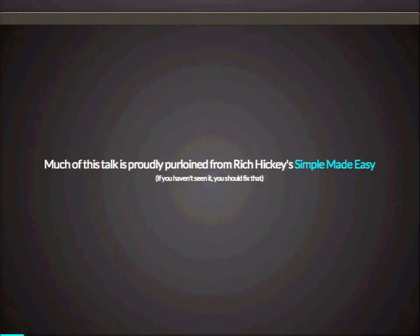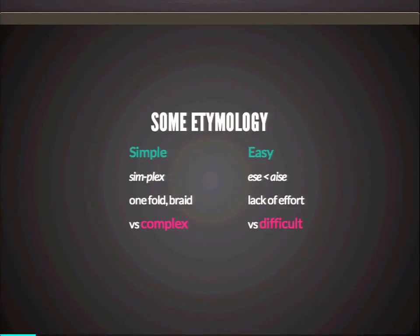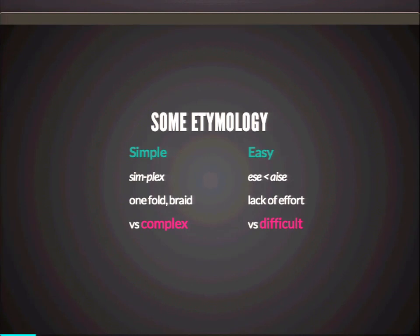He starts his talk, as will I, by talking about word origins. So here's the etymology real quick. Two words: simple and easy. Simple comes from the Latin simplex or simplus. Simplex means quite literally — the two parts of the word mean one fold or braid. Its opposite, of course, is complex.